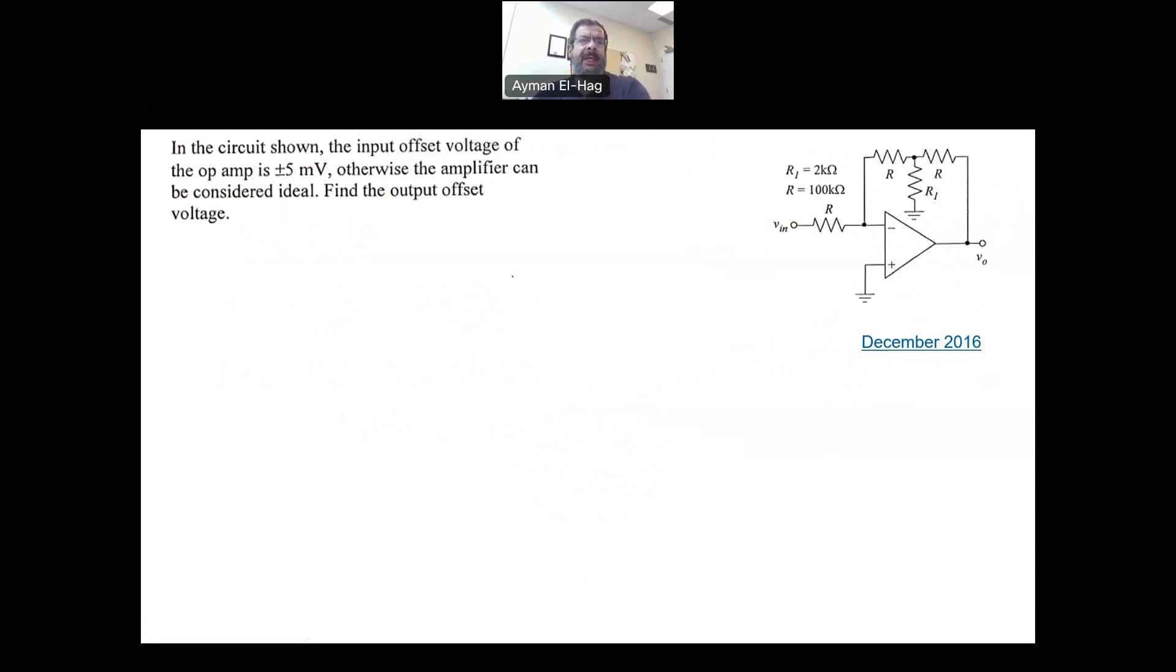In this question, again, the input offset voltage is plus minus five millivolt, and we always connect it to the positive. So, we have here plus minus your V offset, and this will be your V offset, and this offset voltage is equal to plus minus five millivolt, and by the way, this comes in the exam of December 2016. Otherwise, the amplifier consider as ideal. So, the only thing here you need to take care of is basically your offset voltage.